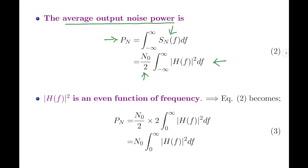Recalling the fact that |H(f)|² is an even function of frequency, the integral from minus infinity to plus infinity reduces to 2 times the integral from 0 to infinity. The factor of 2 in the numerator and the 2 in the denominator cancel. Therefore, the average output noise power is Pn = N0 · ∫₀^∞ |H(f)|² df.